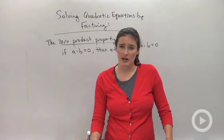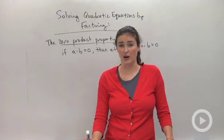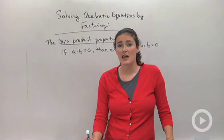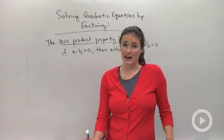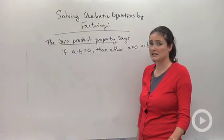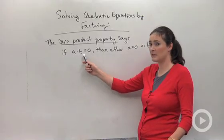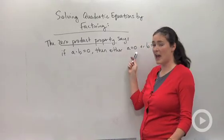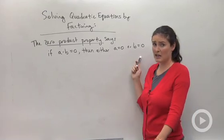Before we get into that though, it's important to think about some stuff you already know about zero. There's an important property we have about zero that's called the zero product property. The zero product property says that if a times b is zero, then either a equals zero or b equals zero.